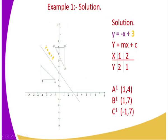Then you write another row for y. For x = 1, you substitute into the equation: y = −(1) + 3, which gives negative one plus three. Therefore the value of y is two.